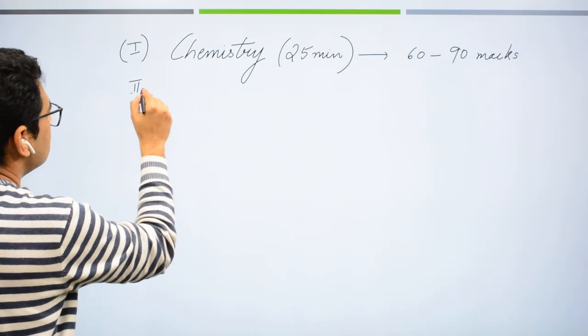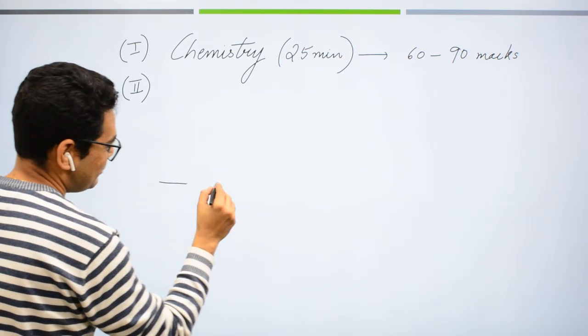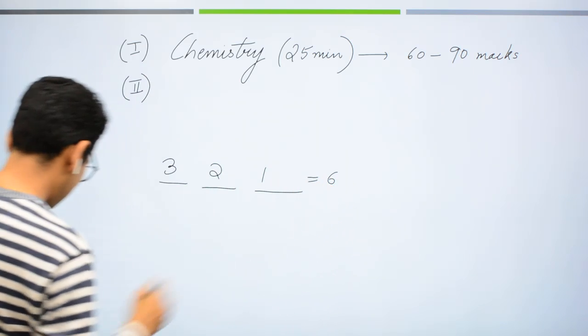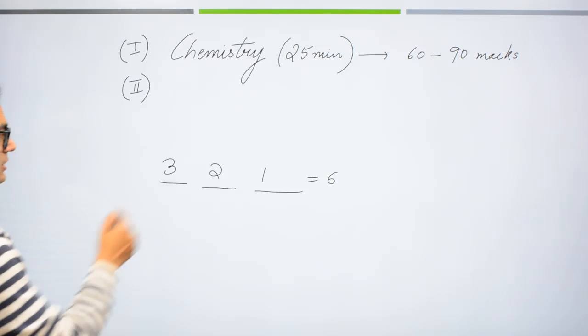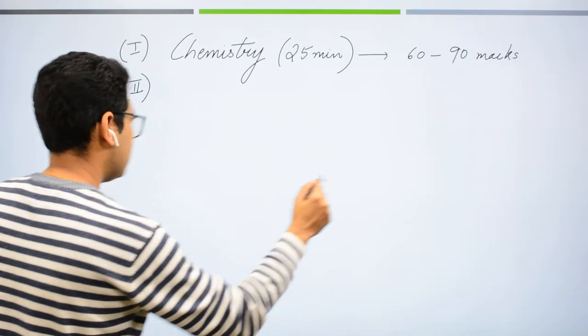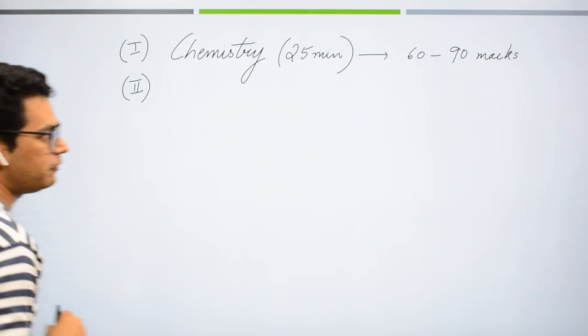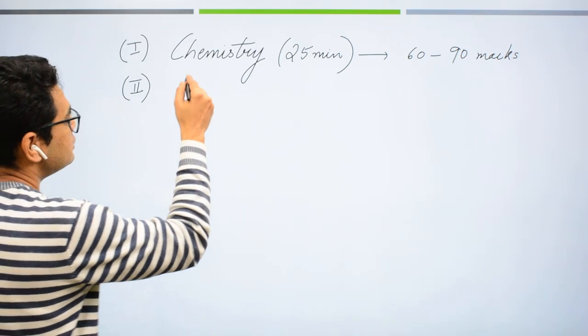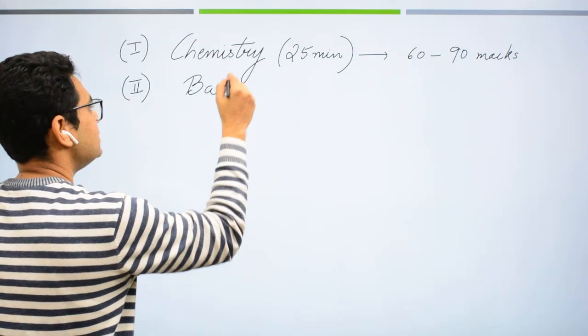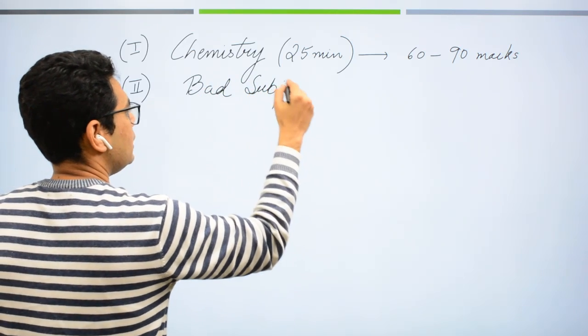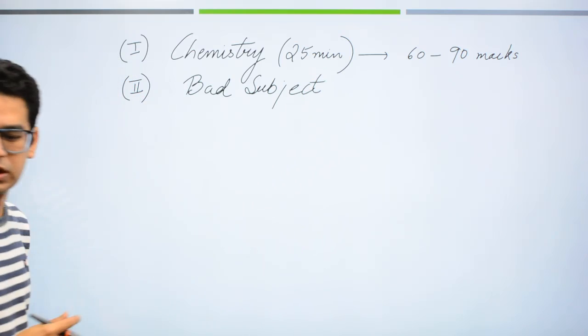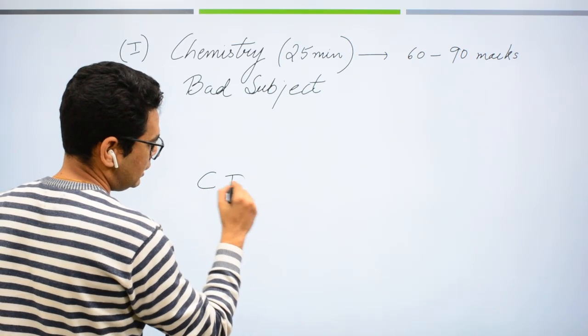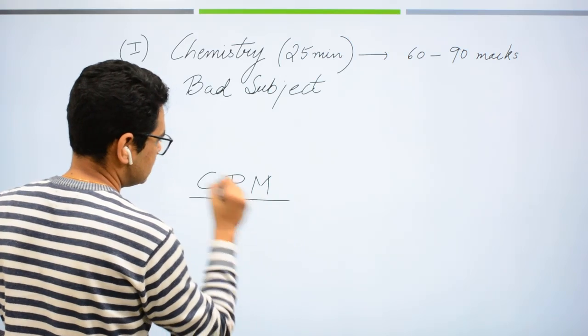Second jo hota hai, abh yahan pe PCM lagti hai. Agar hum baat karein ki sir, mein fix kar deta hun chemistry ko first, second pe kya aayega. Dekho, sabka apna personal preference hai, mein kisi ko force nahi kar raha hun ki yeh follow karo. Jo tumhara sahi lagta hai usse hi karna hai. But mera yahaan maana chahiye, you should pick something which is bad for you, bad subject. Bad subject relative term hai. Dil pe mat lye na is baat ko.